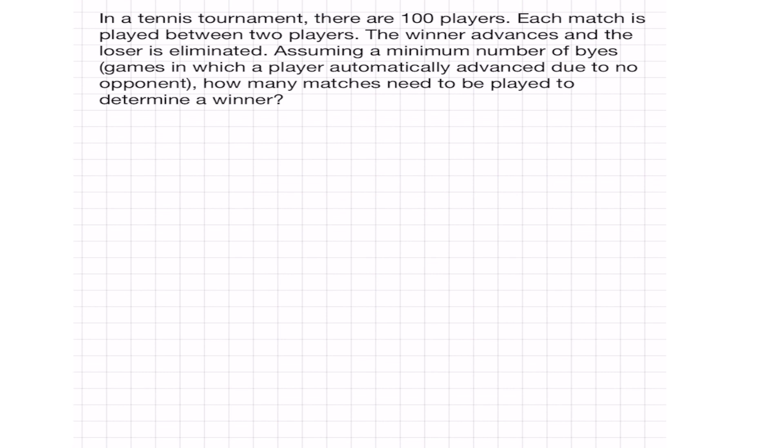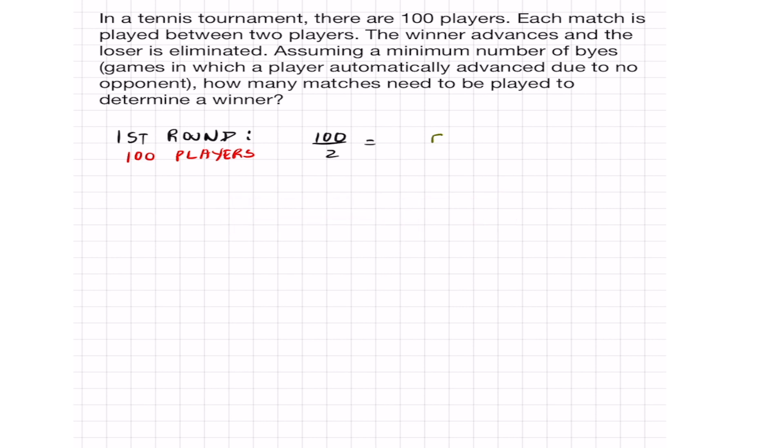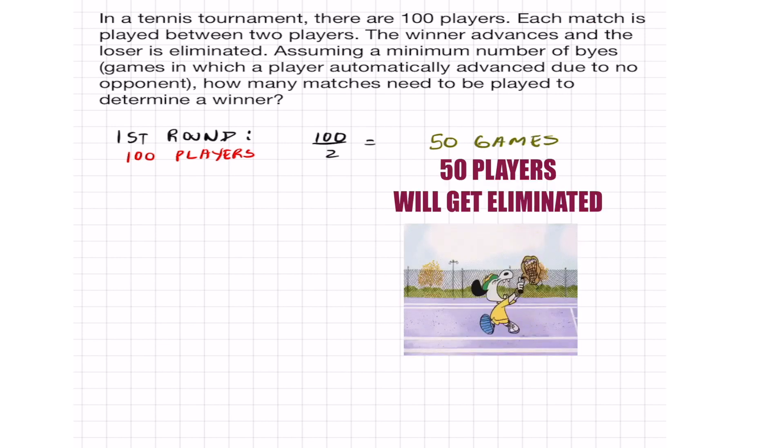I'm going to break this off round by round, starting with the first round. In the first round, everyone is still there. There are 100 players. To determine the number of games that need to be played, we just take the number of players, 100, divided by 2, and that will get me 50 games that need to be played. And at the end of first round, there will be 50 players left.